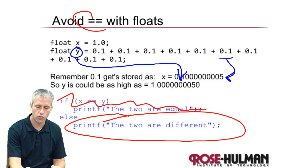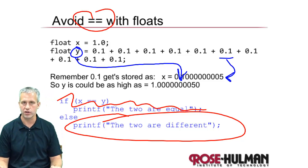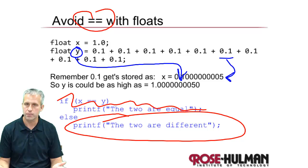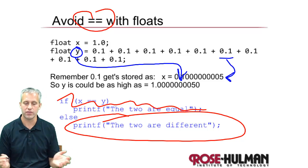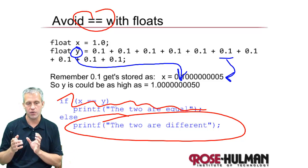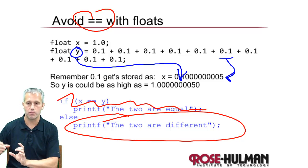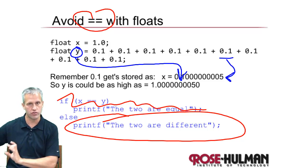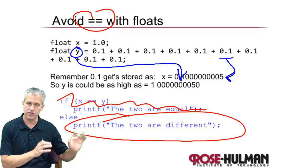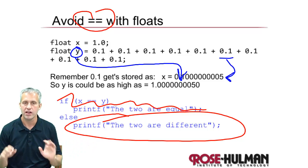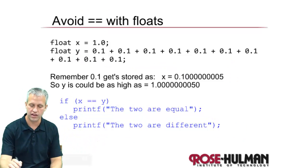Moral of the story is avoid equal equals when you're comparing floats. If you ever want to compare floats, always do it with like two steps. Say like, is it less than this number plus 0.001 and is it greater than this number minus 0.001. You always have to kind of do that. Is it within this error tolerance?